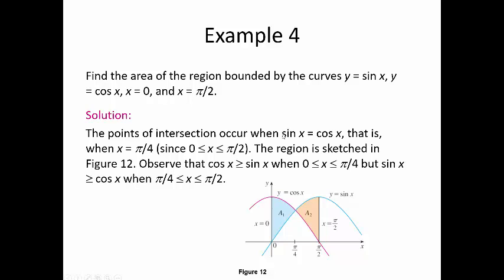The points of intersection occur when sine of x equals cosine of x. In this red-pink color here is cosine of x, graphed between 0 and pi over 2. And in blue or turquoise you have sine. They intersect at pi over 4. This one gets a little crazy: in the first area, cosine is on top and sine is on bottom. But then in the second area, sine is on top and cosine is on bottom. That means you're going to have to find the two areas separately.